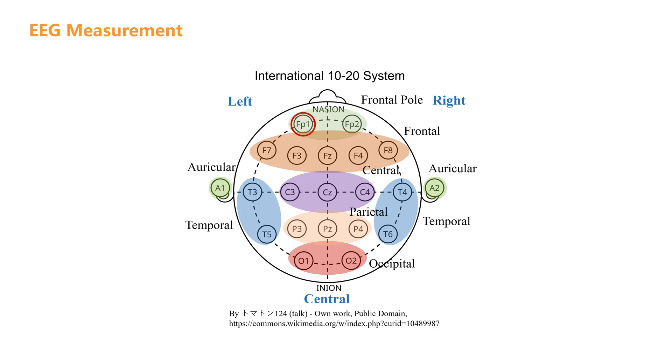For example, FP1 represents the left frontal polar position, while CZ refers to the electrode located at the central top of the head.